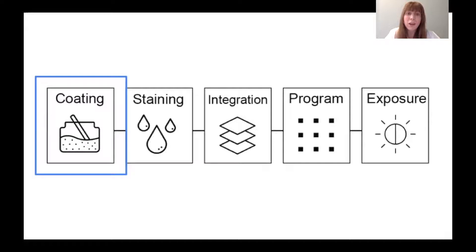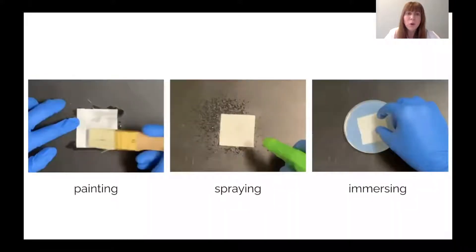We start by coating cotton with silver-doped titanium dioxide nanoparticles, which degrade stains when exposed to light. We first explored three methods of coating the cotton with nanoparticles.